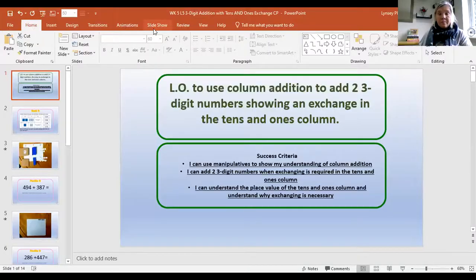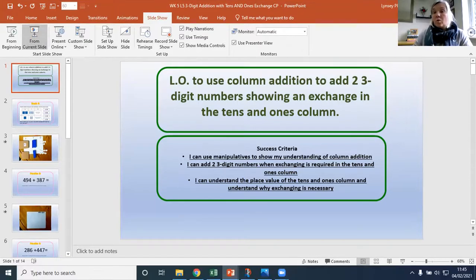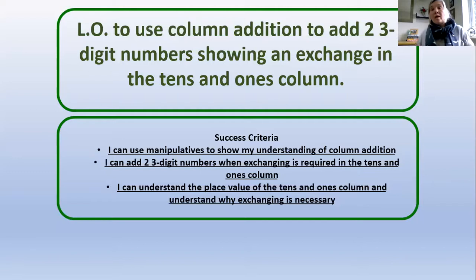From our learning objective, we are looking at column addition with three digits but today we are going to be looking at exchanging in the tens and the ones column. So we are starting to consolidate all that knowledge that we've had this week and we're putting it into one calculation. But today we are still going to be using the manipulatives, that concrete equipment, mathematical equipment to help us with our understanding. To be successful we will be able to add two three-digit numbers when exchanging is required in the tens and ones and understand that place value and knowing why we are exchanging and why we cannot have more than one digit in each column.